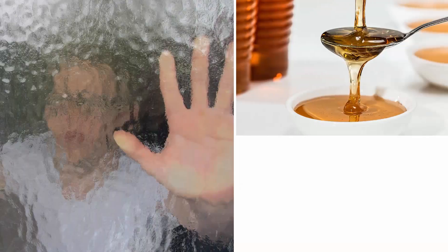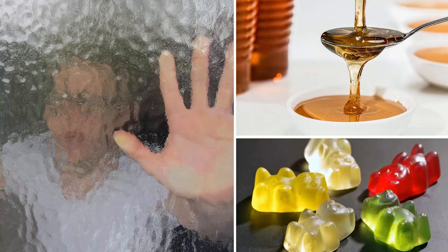Frosted glass, plastic, honey, and jelly are some examples of translucent objects.